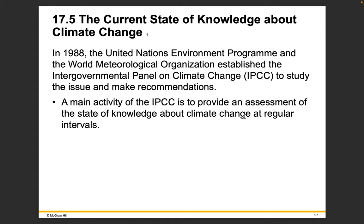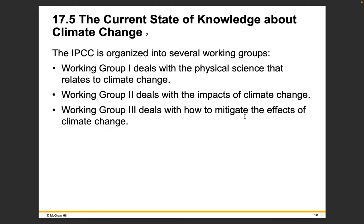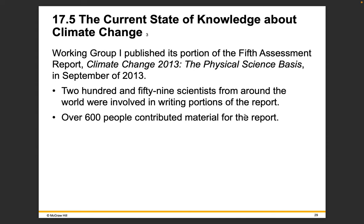Now let's look at the current state of knowledge about climate change. In 1988, the United Nations Environment Program and World Meteorological Organization established the Intergovernmental Panel on Climate Change, or IPCC, to study the issue and make recommendations. The IPCC is organized into several working groups: Working Group 1 deals with the physical science relating to climate change, Working Group 2 deals with the impacts of climate change, and Working Group 3 deals with how to mitigate the effects of climate change. Working Group 1 published its portion of the 5th Assessment Report in 2013, involving 259 scientists from around the world, with more than 600 scientists contributing material. It's a massive scientific effort.